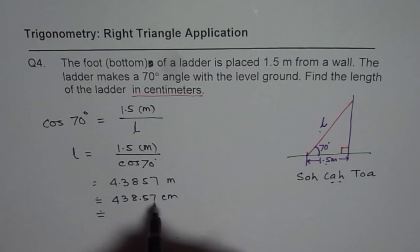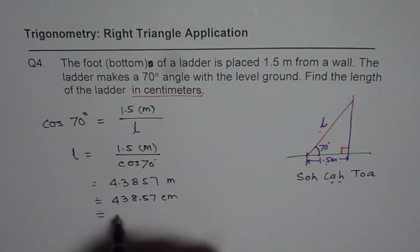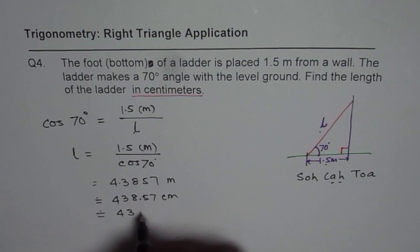And rounding this to one decimal place which we are doing for all, we could actually write 4.30 or just write 4.39 centimeters. Round it to centimeters.